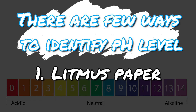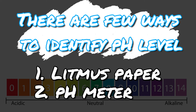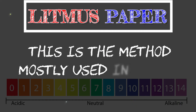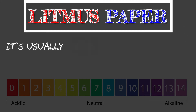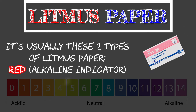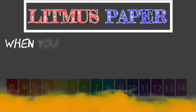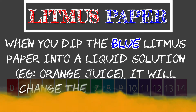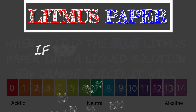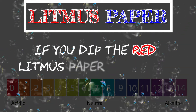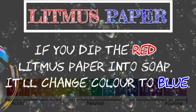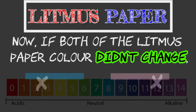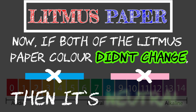Litmus paper is the method mostly used in school during science class. It usually comes in two types: red and blue. When you dip the blue litmus paper into an acidic liquid solution, it will change color to red. If you dip the red litmus paper into soap, it will change color to blue. Now, if both litmus papers' color didn't change, then it's neutral.